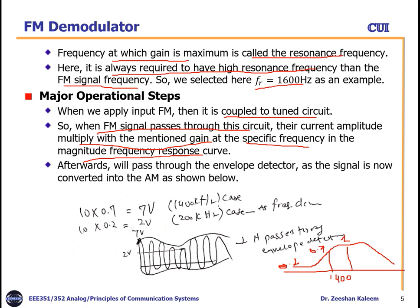When the FM signal passes through the circuit, for 1400 kHz with input voltage of 10 V and gain of 0.7, we get 7 volts at the output. For the 200 kHz component with gain 0.2, 10 × 0.2 gives 2 volts. After passing through this circuit we get an AM signal, which we then pass to the envelope detector. Using just a diode and resistor, the envelope detector extracts the message signal from the AM signal.